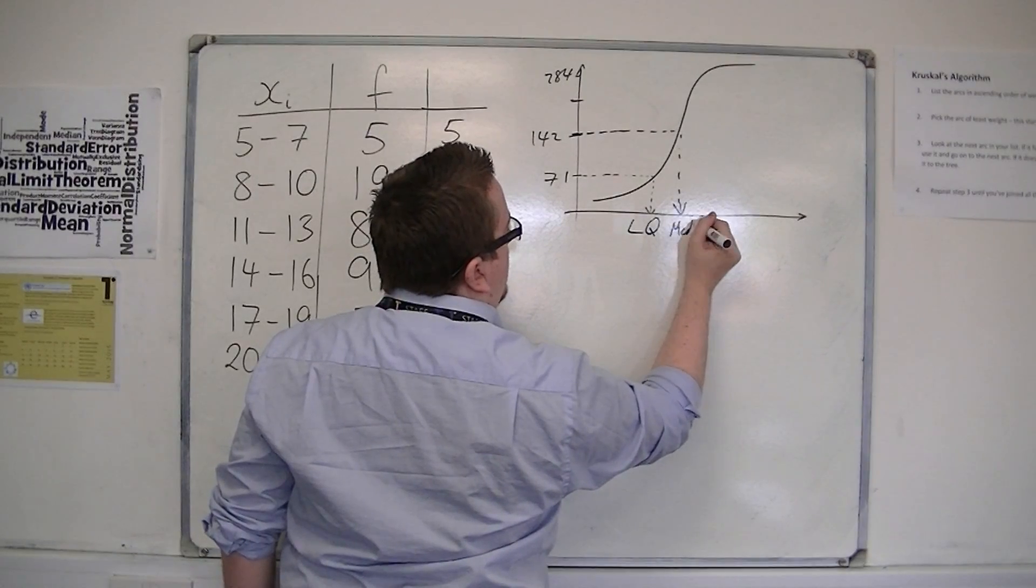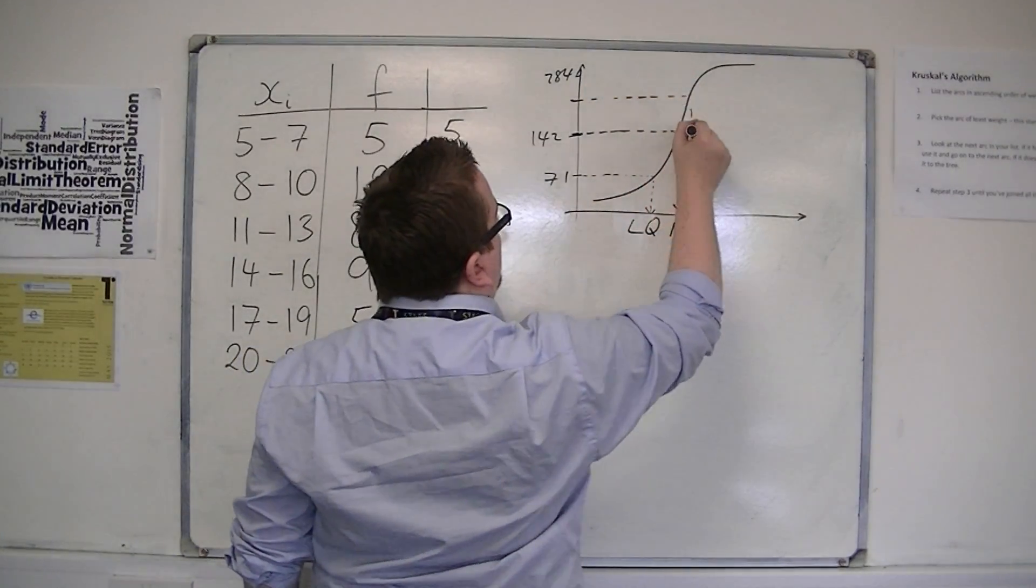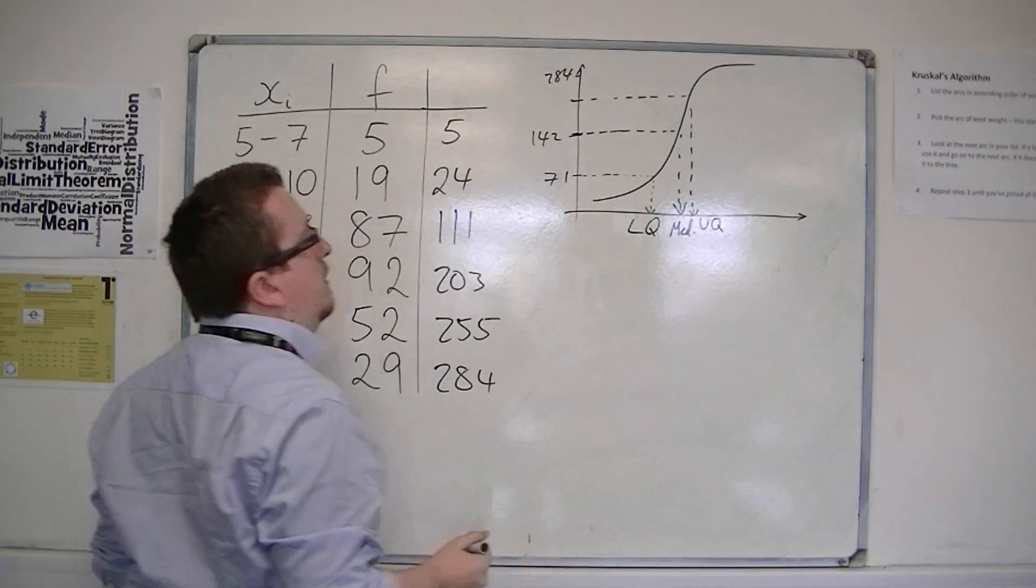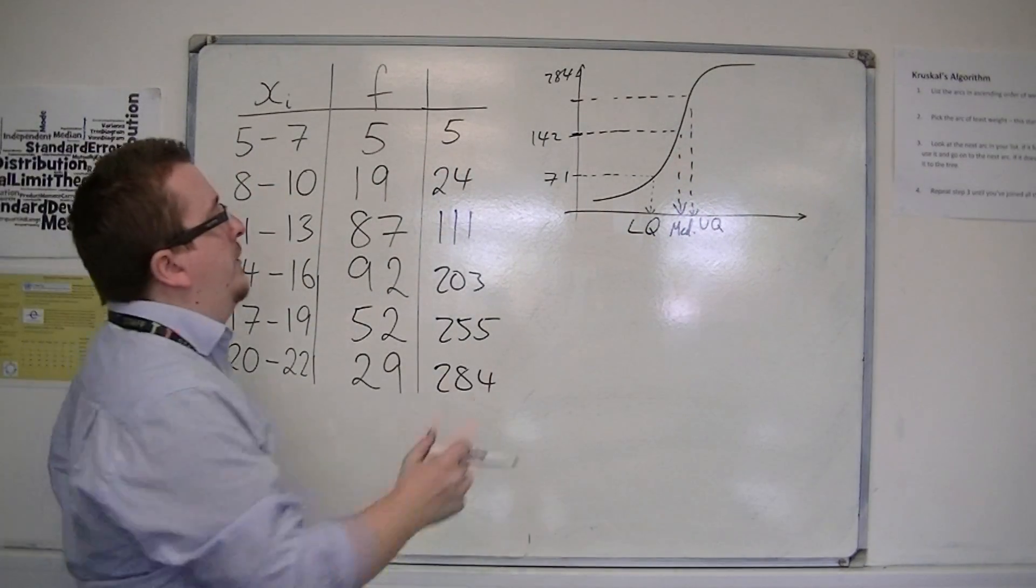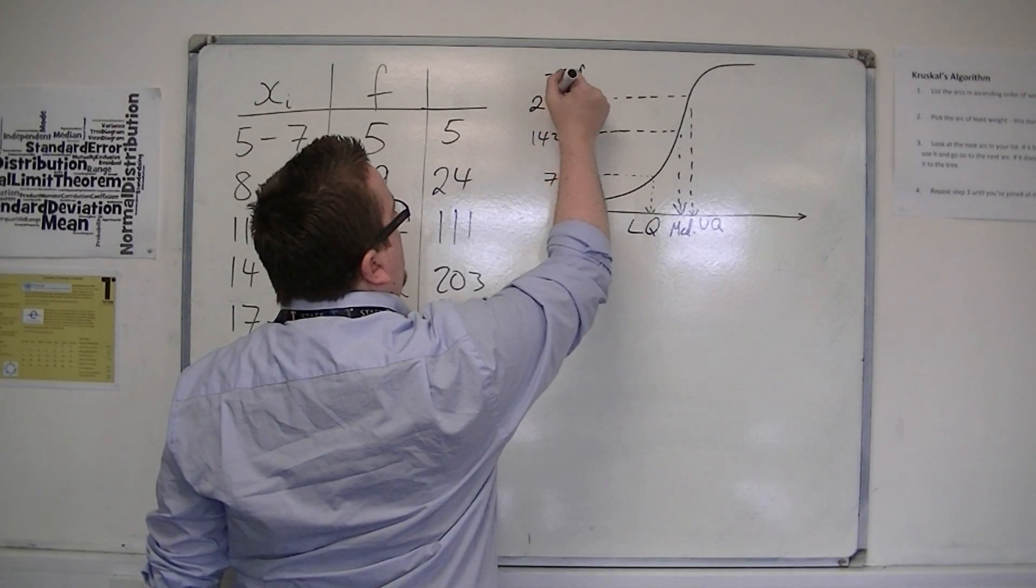And that would be your lower quartile. So you'd have your median, and then you'd have the upper quartile. Like so. 71 again, so 213.